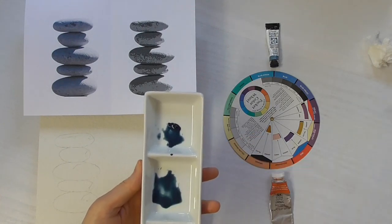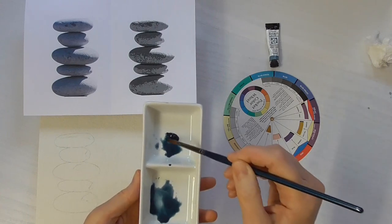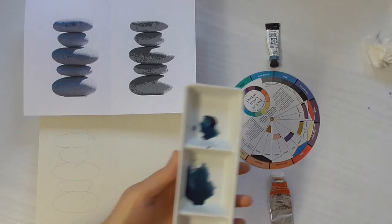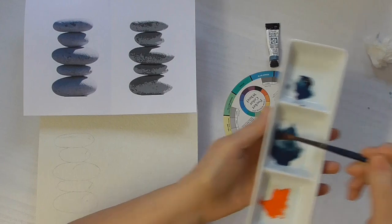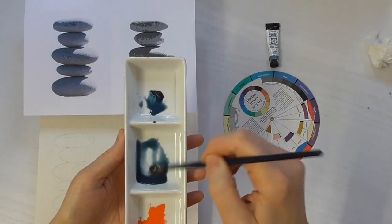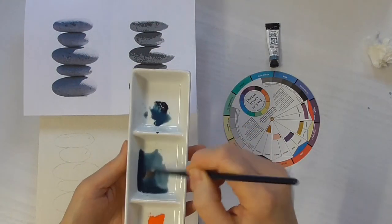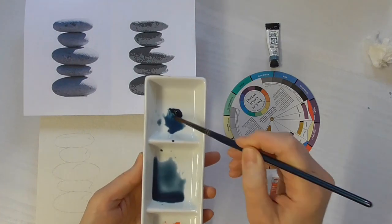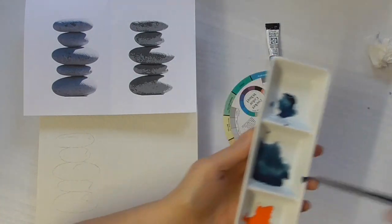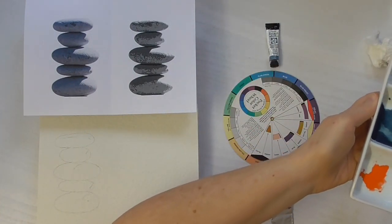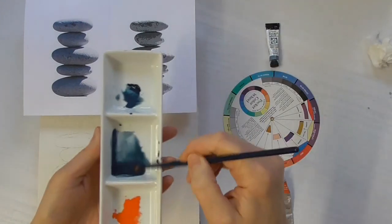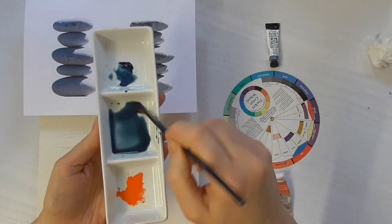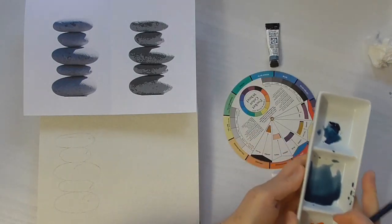You can either pour some water into the middle well to make a big puddle, or you can spray it in, or you can do as I'm doing—I'm just adding brushfuls and brushfuls of water so that I can be a bit more accurate in the dilution of the paint that I've got. I think that should give me enough to cover the whole stack of pebbles.